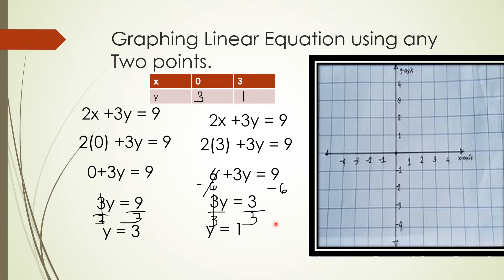I can now plot these points on the Cartesian plane. First point: x is 0 and y is 3, so from the origin I go up 3 units — the point is at (0, 3). Next, x is 3, so I find 3 on the x-axis, then go up 1 unit since it's positive — that's my second point at (3, 1). Now simply connect these two points, and this is the graph of 2x plus 3y equals 9.